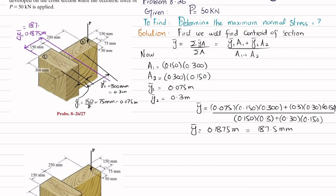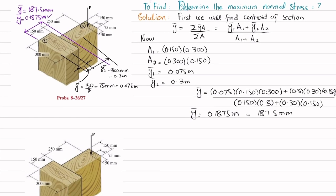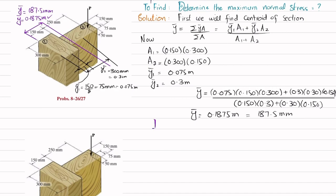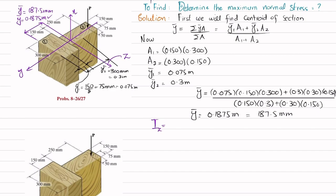Now we find the moment of inertia I. The x-axis is along the length of the column, and the y and z axes are transverse. We need I about the z-axis because transferring the eccentric load to the centroid produces a moment about z. We apply the parallel axis theorem to each board.